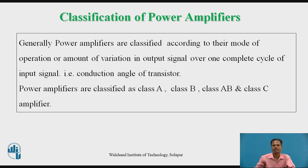Now let us classify the power amplifiers. Generally, power amplifiers are classified according to their mode of operation, or the amount of variation in the output signal over one complete cycle of the input signal — that is, the conduction angle of the transistor. Power amplifiers are classified and named as: Class A power amplifier, Class B power amplifier, Class AB power amplifier, and Class C power amplifier.